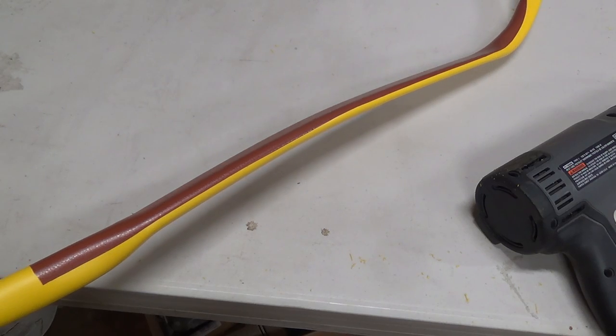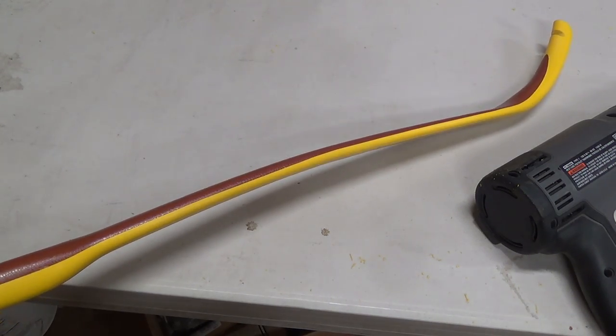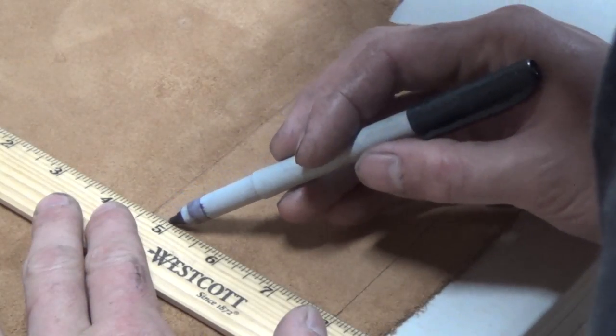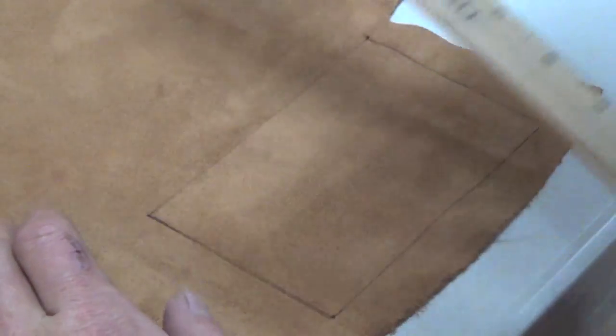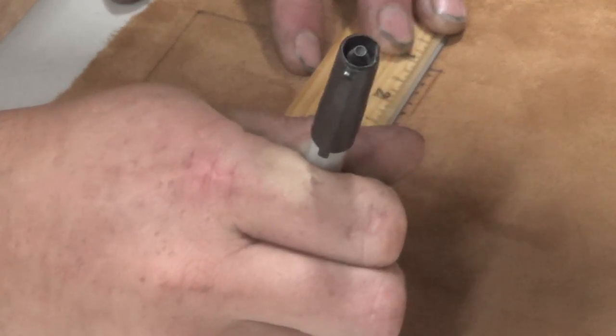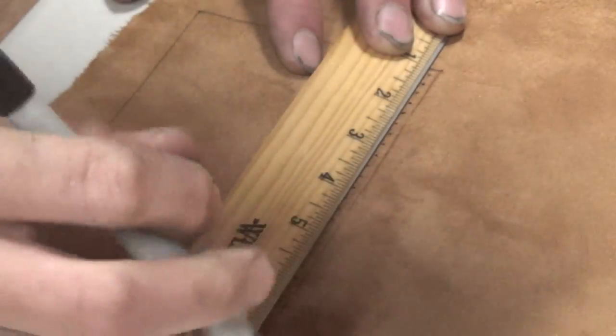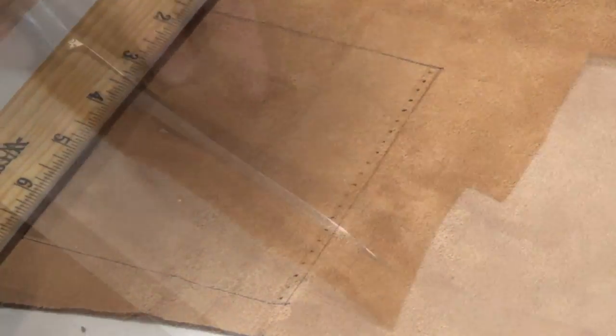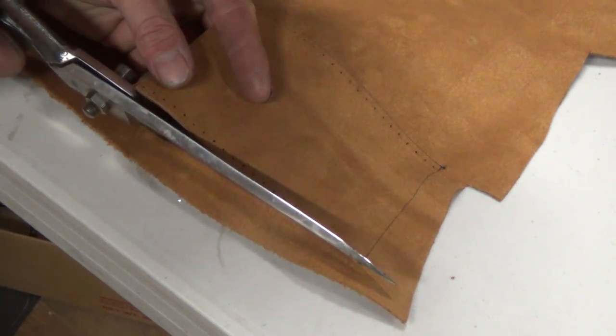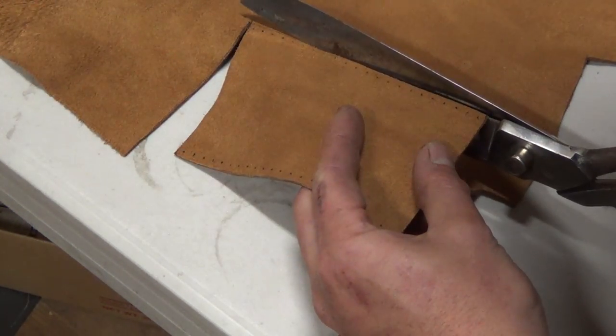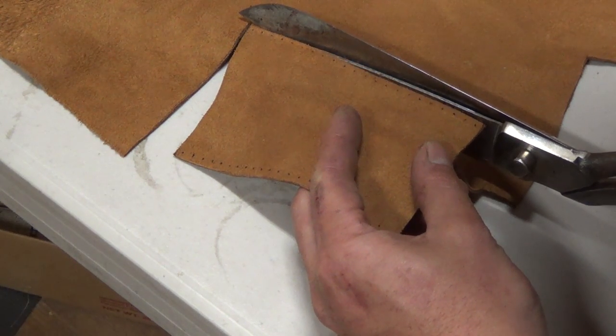Once I've applied the vinyl to the other bow limb I trace out a three and a half by five and a half inch rectangle onto a piece of leather for the handle wrap. I use a pen to mark my lacing holes a quarter of an inch apart and then I cut my handle out using a pair of shears. I like using these because it gives a nice clean finished edge.